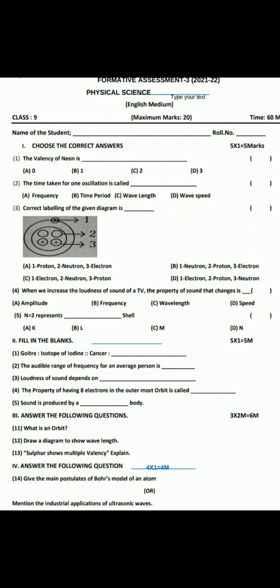Question: N equal to 2 represents which shell? The shells are K, L, M, and N. N=1 is the K shell, N=2 is the L shell, N=3 is the M shell, N=4 is the N shell. So N=2 represents the L shell. Option B is the answer.